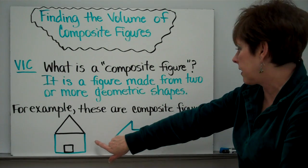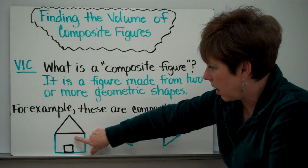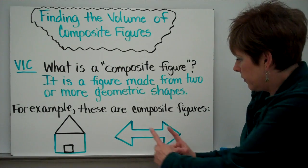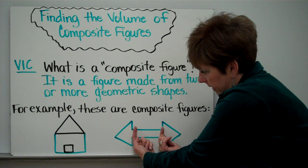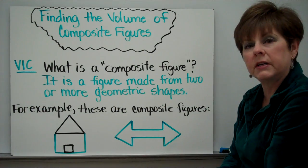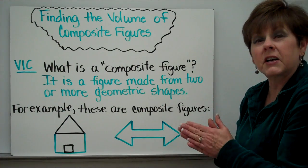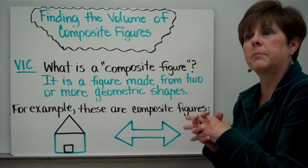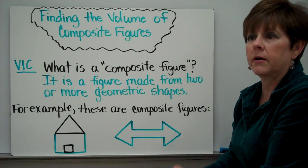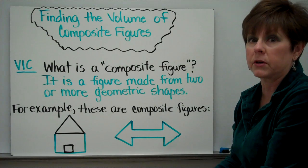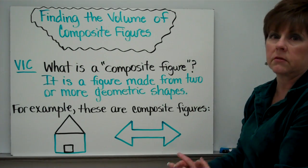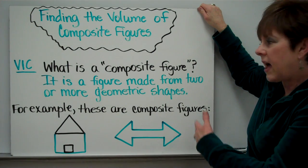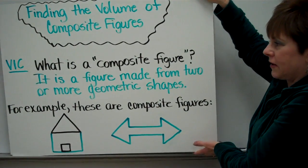For example, this is a composite figure. It has a triangle along with a rectangle along with — could be a square or a rectangle there. Here you have, if you look at this part right here, a rectangle, and on either end you see two triangles. So that's a composite figure. It could be two rectangles, it could be a rectangle and a square, etc. We're going to be looking basically at rectangular prisms here in fifth grade. But let's look at finding the volume when you have a figure that has more than one geometric shape.